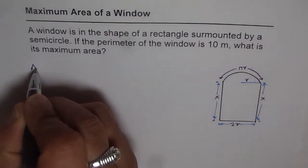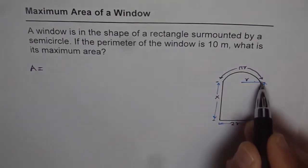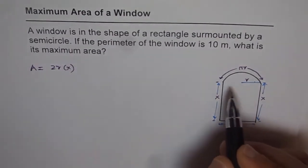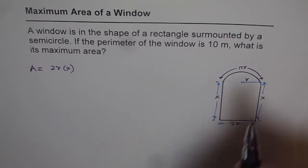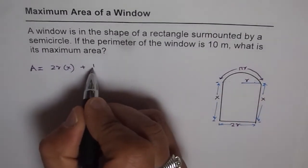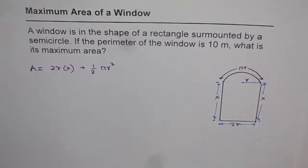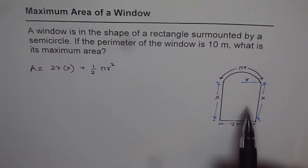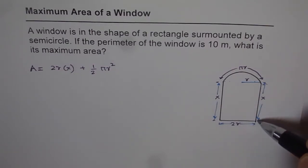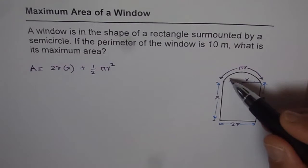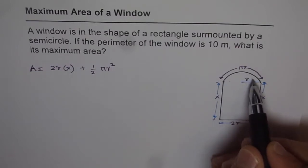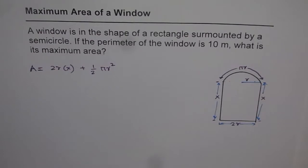To find the maximum area, we note that the area is the area of the rectangle, which is 2r times x, plus the area of the semicircle, which is half of π r squared. We defined r as the radius of the semicircle, so the width of the rectangle becomes 2r and the height is x. The area of the rectangle is x times 2r, and the semicircle contributes half π r squared.